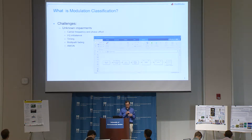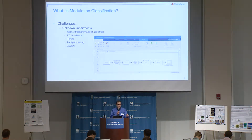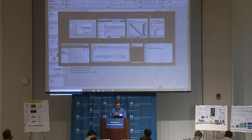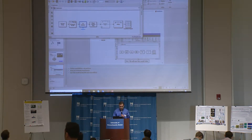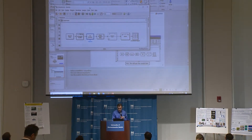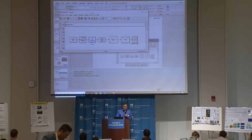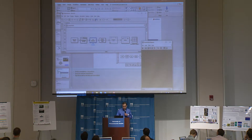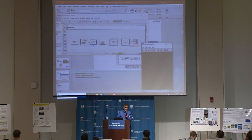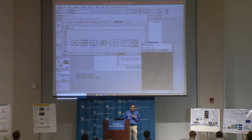We also have some challenges. If everything was ideal, we wouldn't need any kind of intelligent system to tell us what kind of modulation type is out there. But in the real world, things are not ideal. Let's switch to Simulink — I created a small model to show what happens. I'm going to start with no impairments at all and run this model, which will start producing some modulated signals.